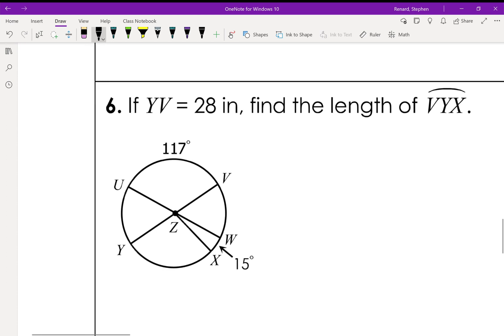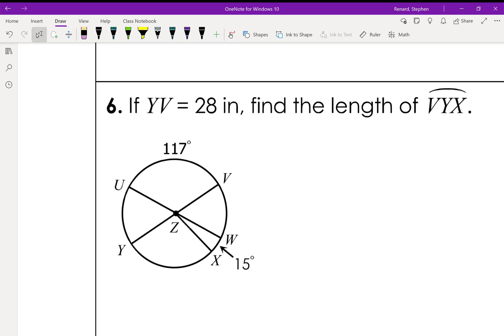On to number six. So Y to V is 28 inches. So that's a diameter. We're going to use c equals πd. Find the length of V, Y, X. Starting at V, going around to Y, and down to X. So we're doing the whole thing except for this right here. So what is that?